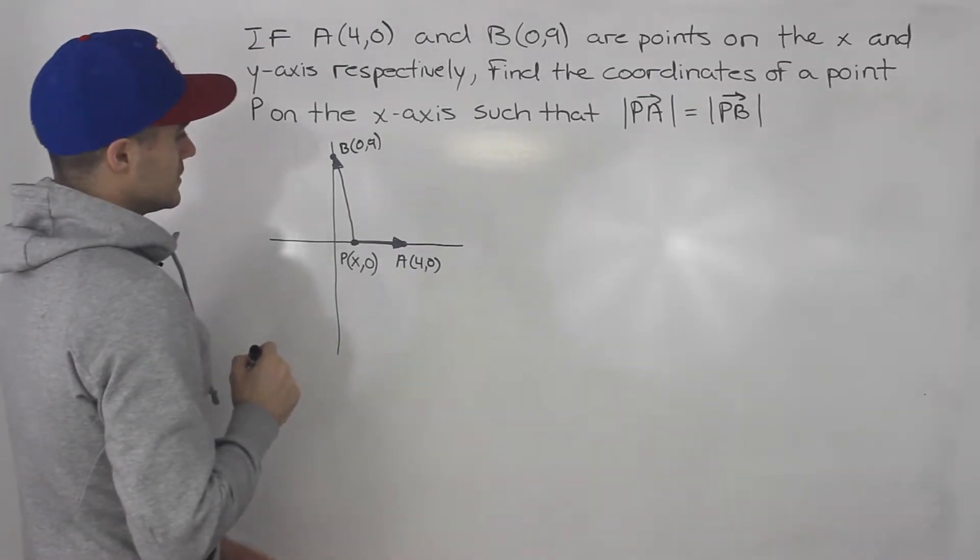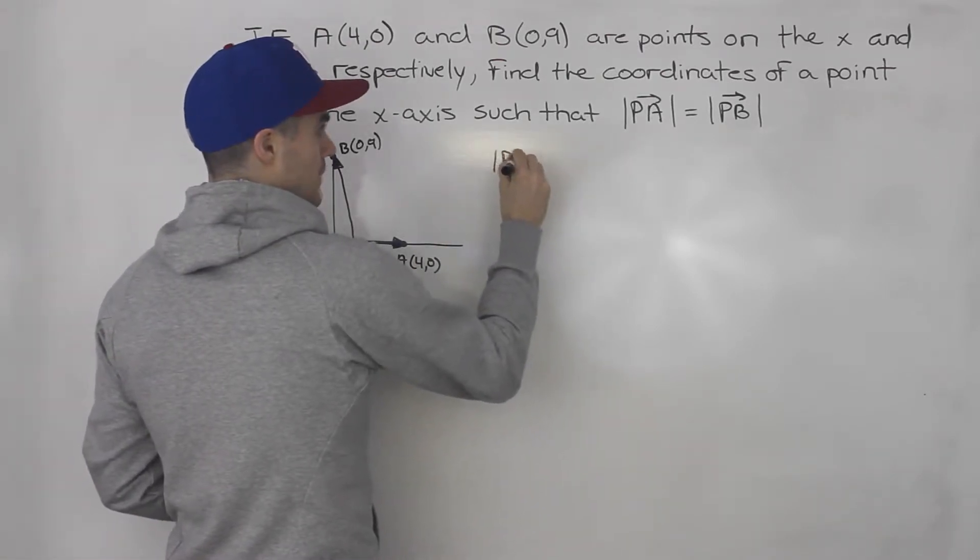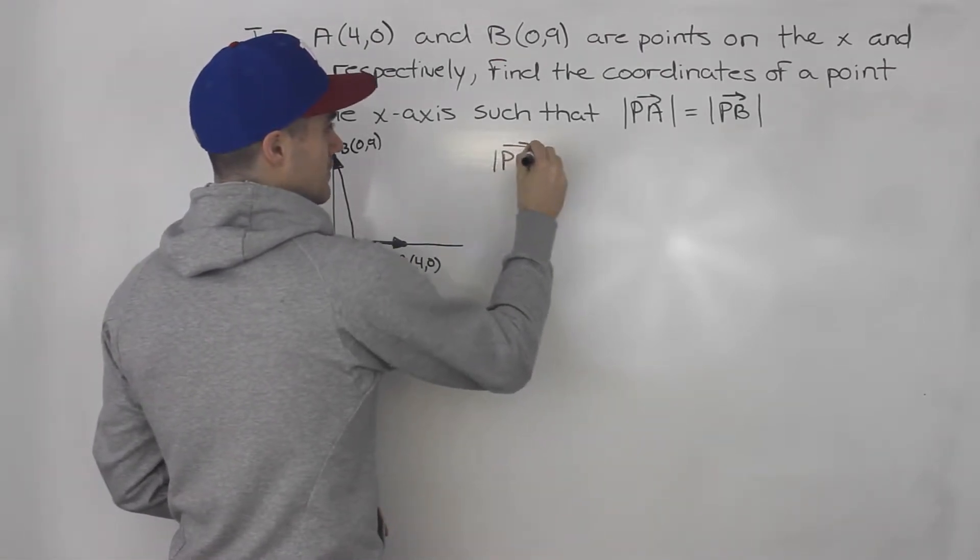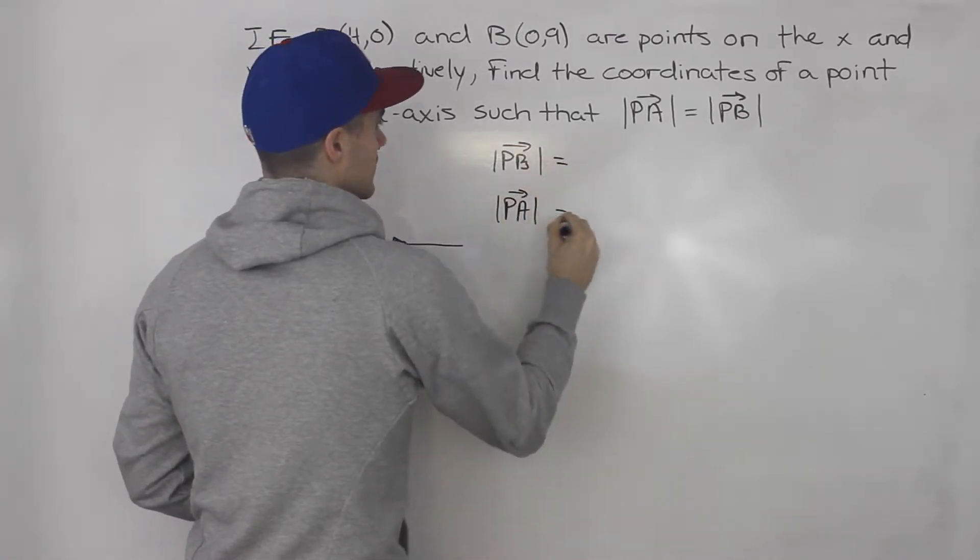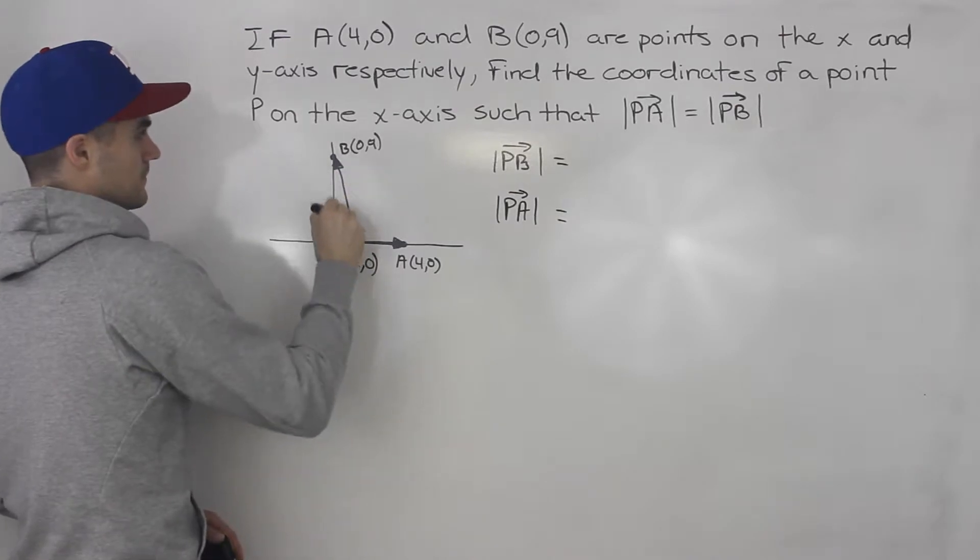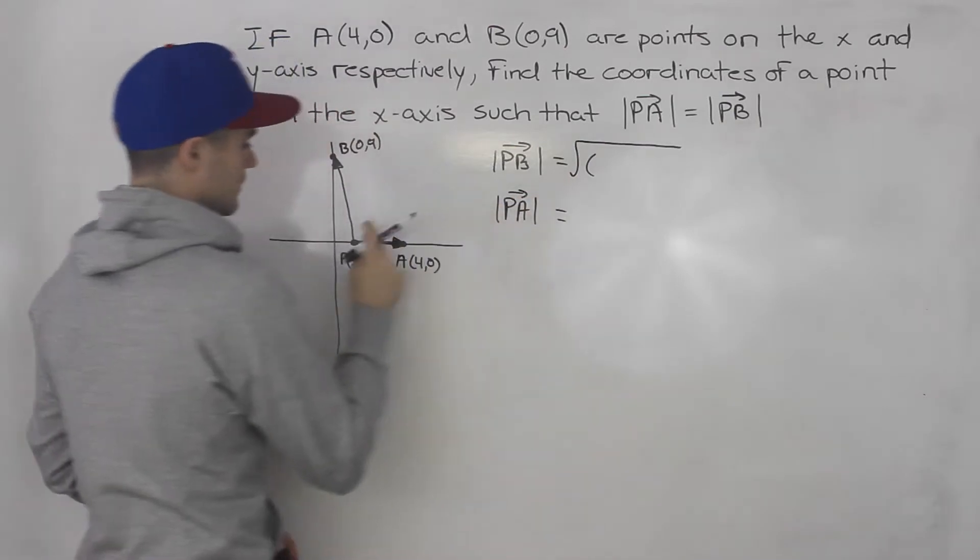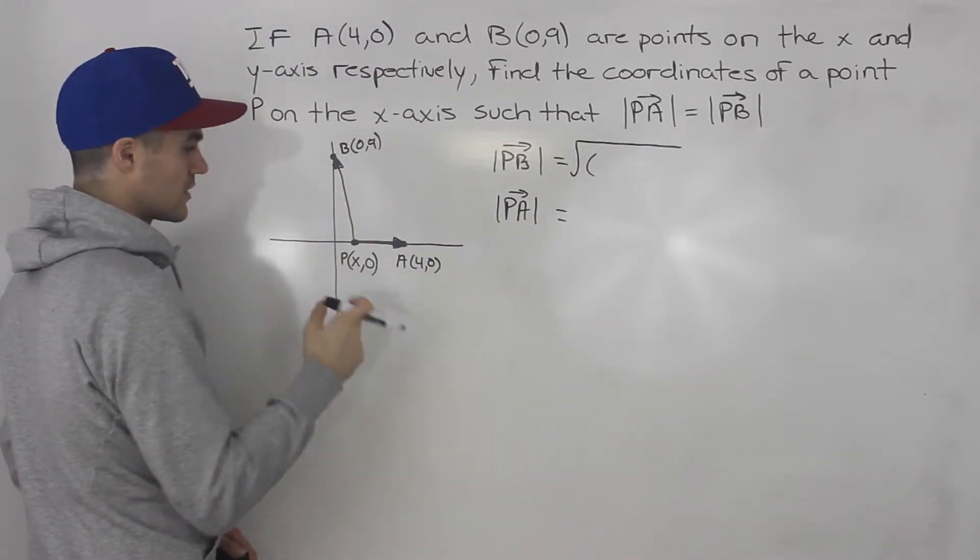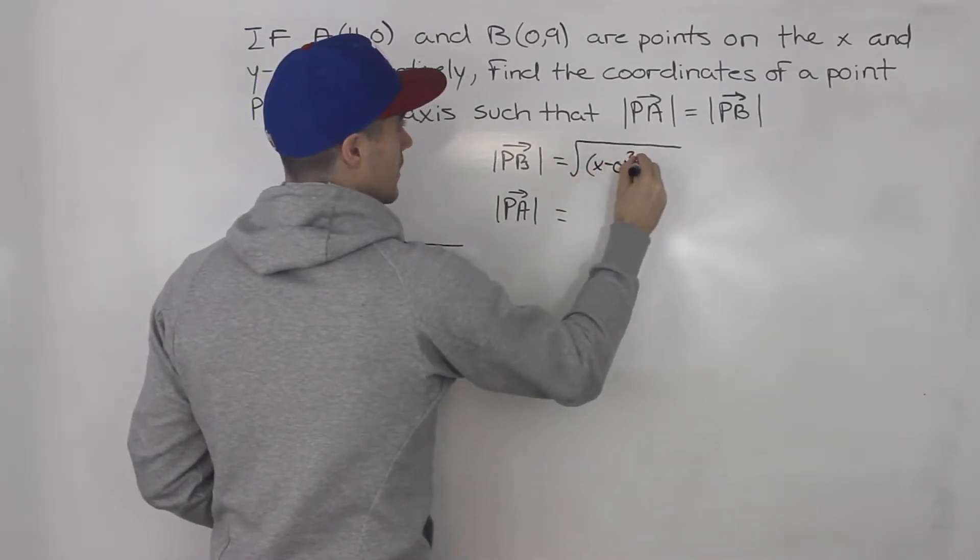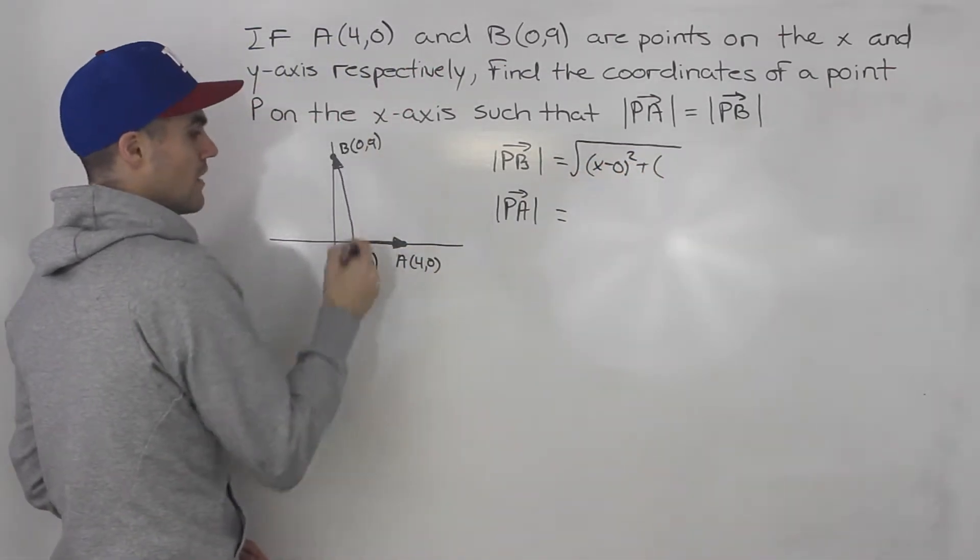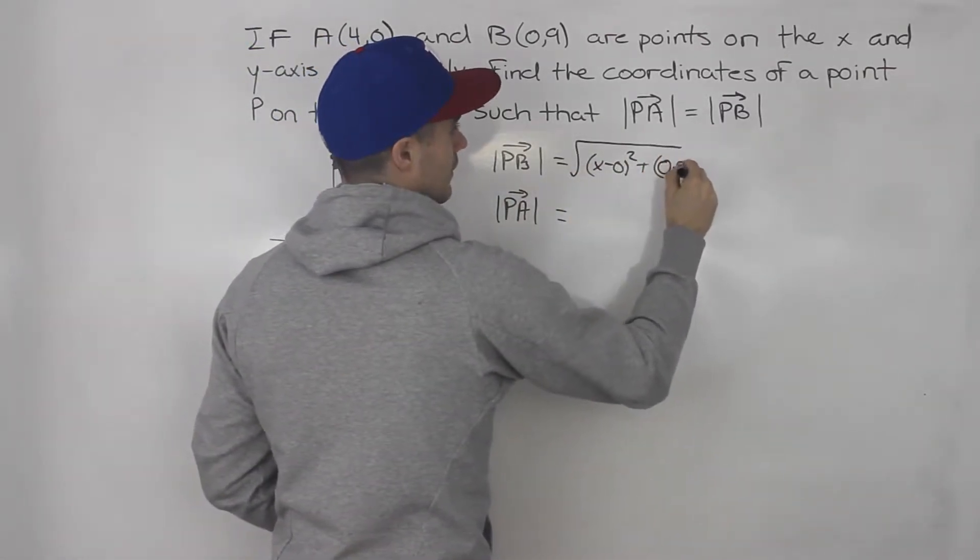What we can do at this point is we can find expressions for the magnitude of PB and the magnitude of PA. Let's start with this vector PB here. How do we find the magnitude? Well it's always the square root of what? The difference in the x value squared, so (x - 0)², plus the difference in the y value squared, so (0 - 9)².